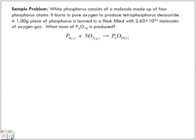We are given a 1.00 gram piece of phosphorus. We are also given a flask of 2.60 times 10 to the power of 23 molecules of oxygen gas.